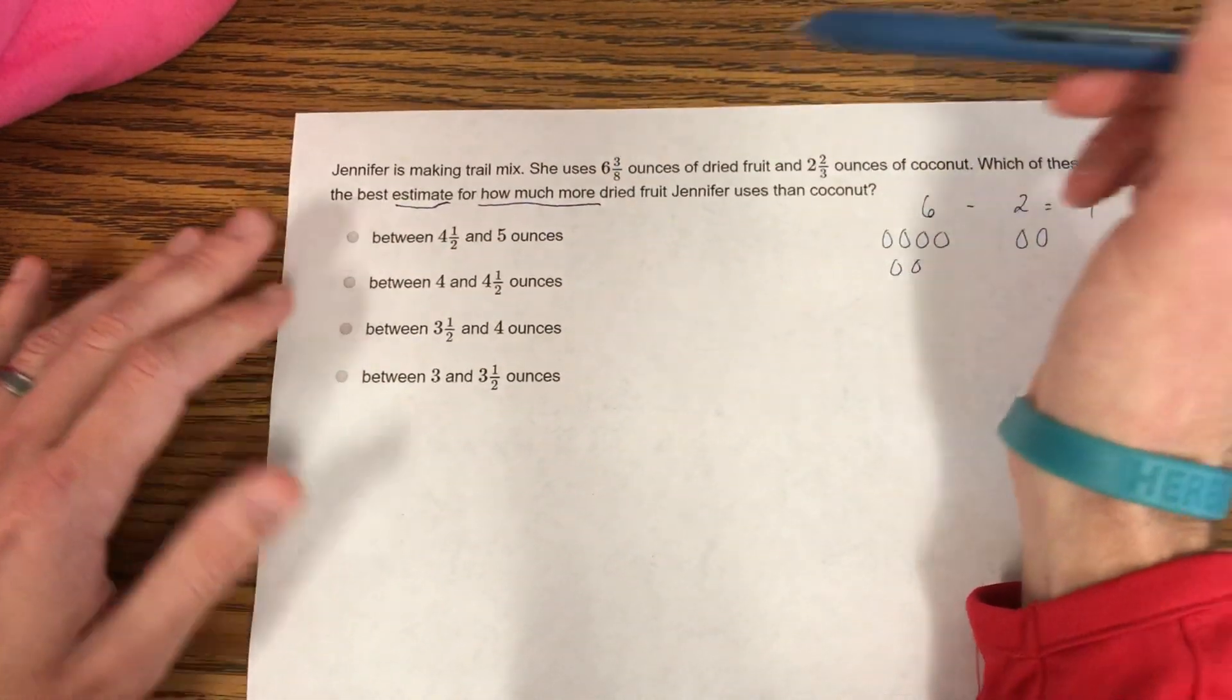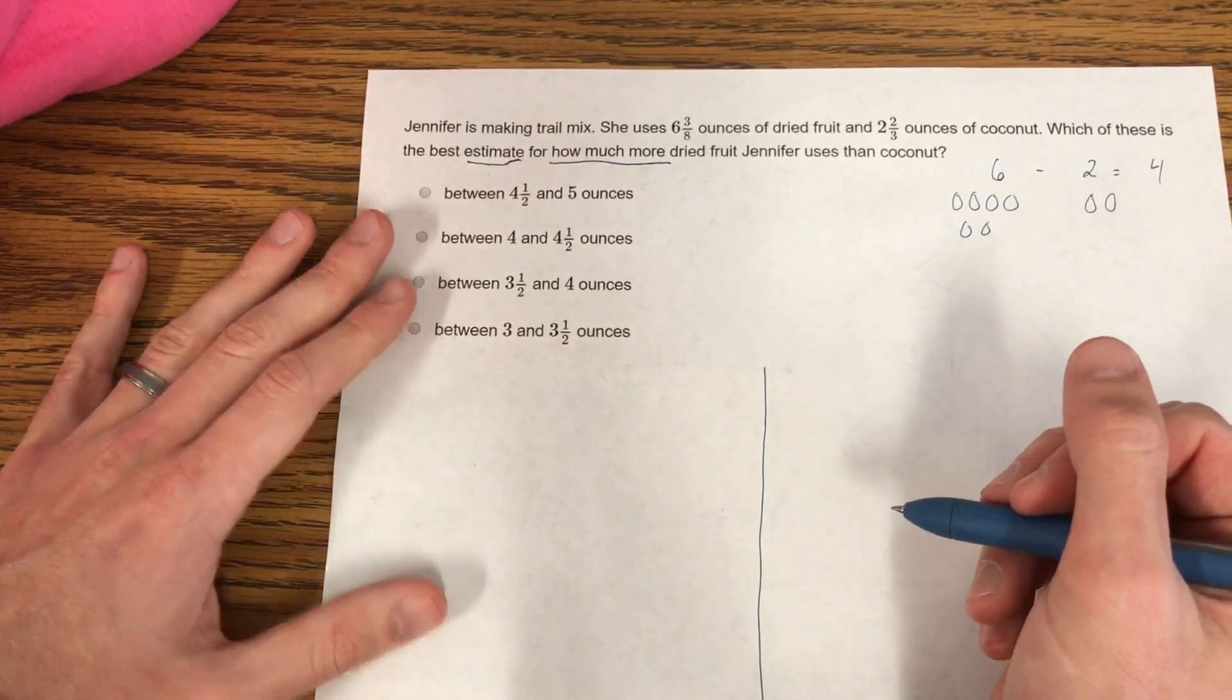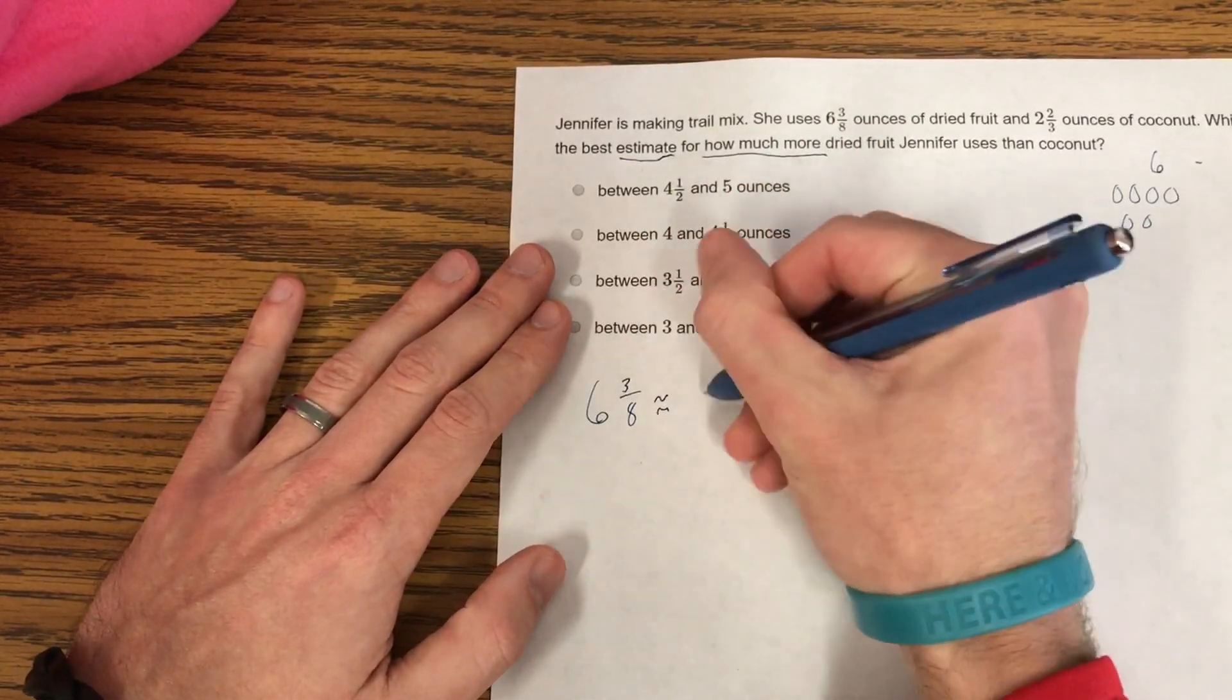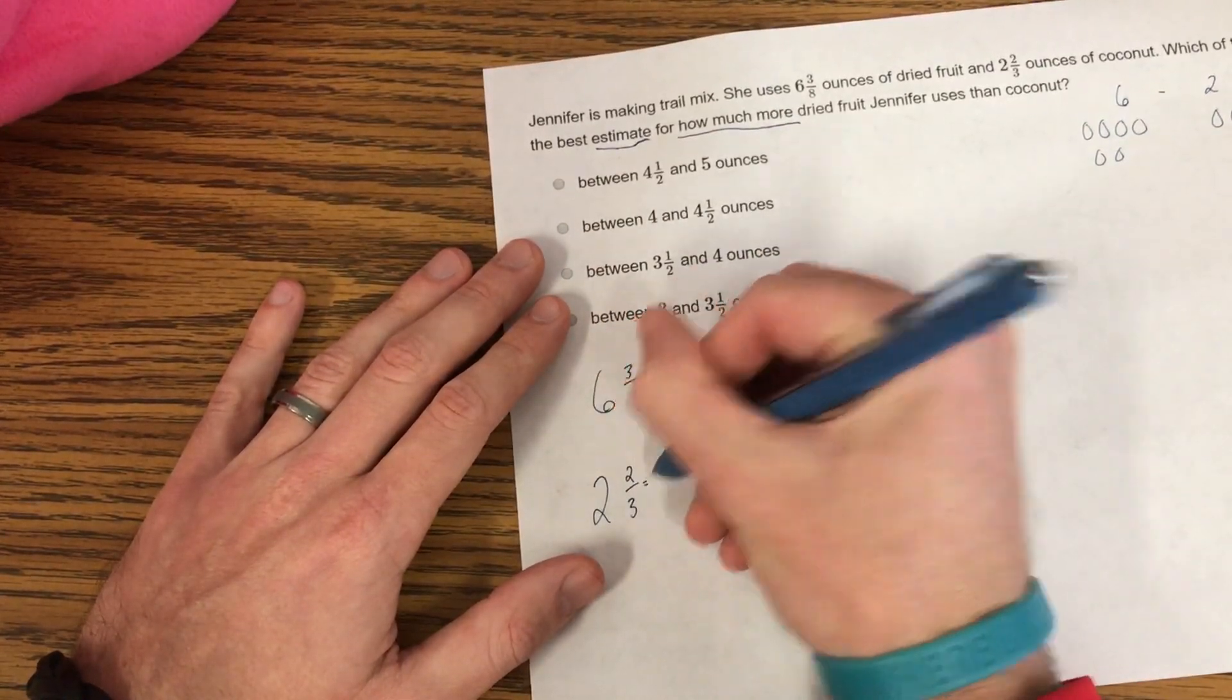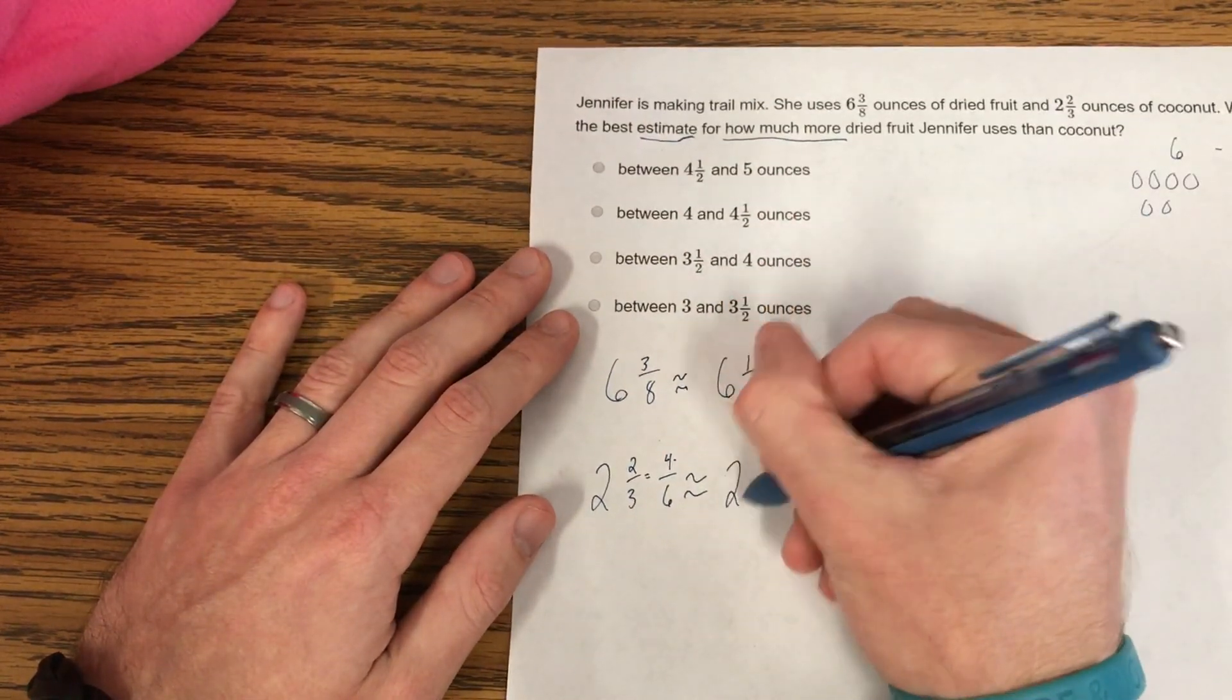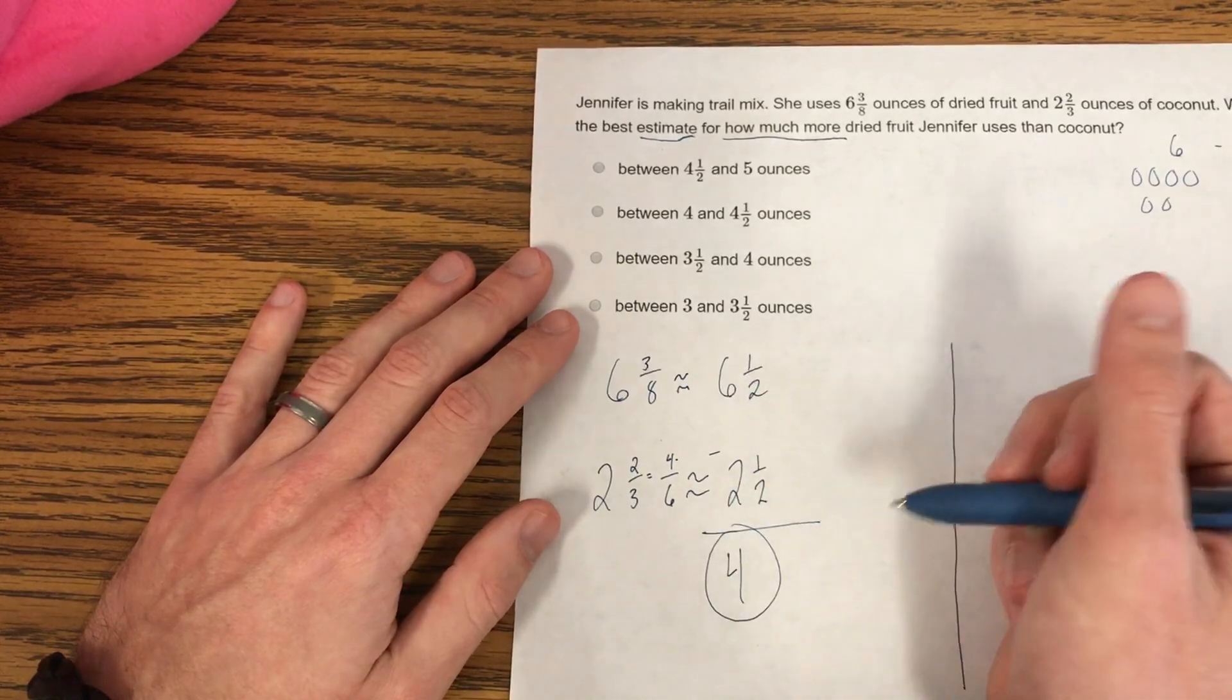So let's take a look: 6 and 3/8 minus 2 and 2/3. These all look very close. So we're going to do two strategies. We're just going to subtract them and get an answer. And we're also going to estimate. Let's estimate first. 6 and 3/8. Well, I know that 4/8 is a half. So I'm going to round this one to about 6 and a half. 2 and 2/3. That's one of those tricky ones. It also equals 4/6, which we know 4/6 is only 1 away from 3/6. So I'm going to round this one to 2 and a half and subtract. 6 minus 2 is 4. 1/2 minus 1/2 is 0. So I get an estimate of about 4.